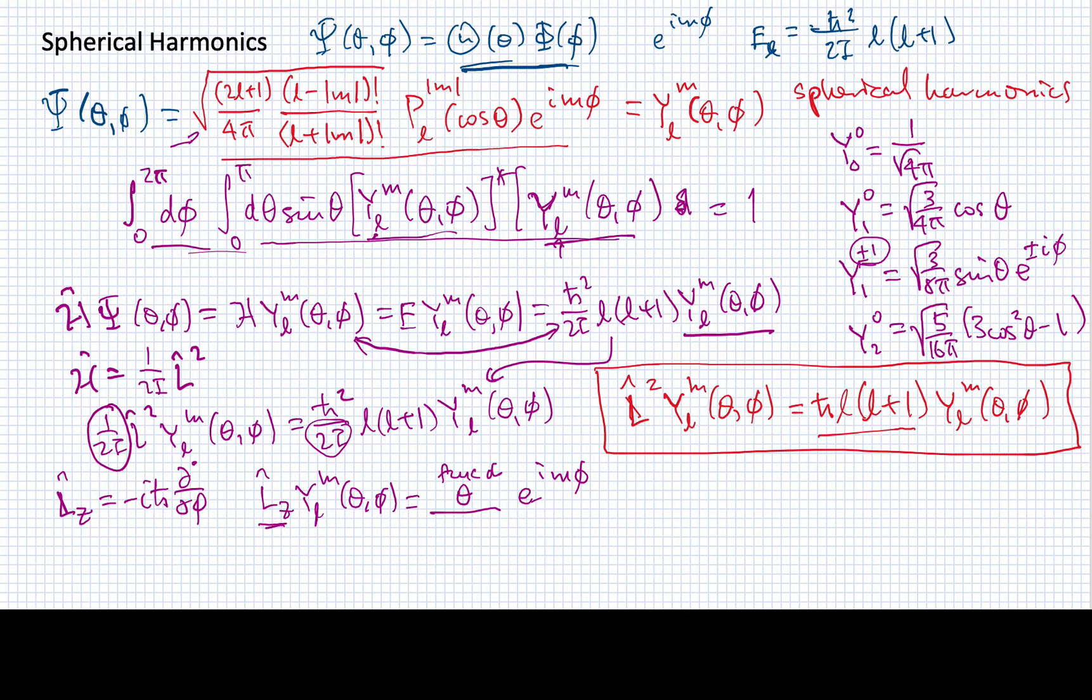So when I take this L_z and operate it on e to the i m phi, I'm just taking the derivative. So I would end up with minus i h-bar times this theta-dependent part times i m times e to the i m phi. So this part will come out here with that, and I'll end up with m h-bar times the theta-dependent part times e to the i m phi, but this is just the spherical harmonic that I started with.